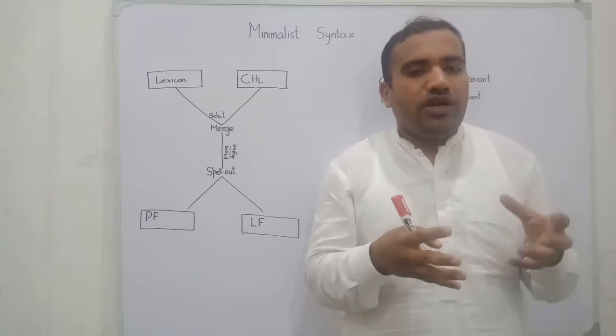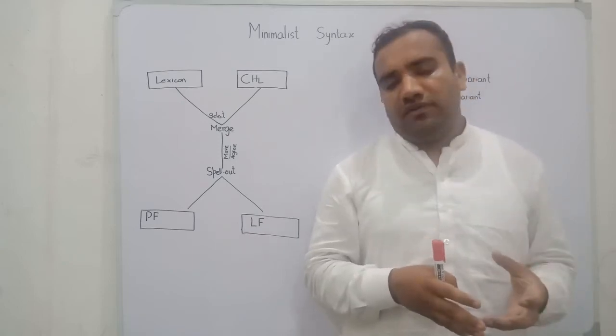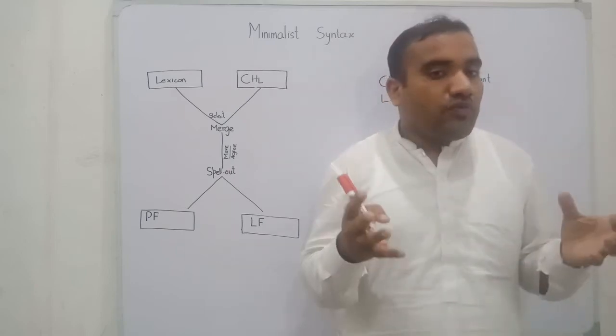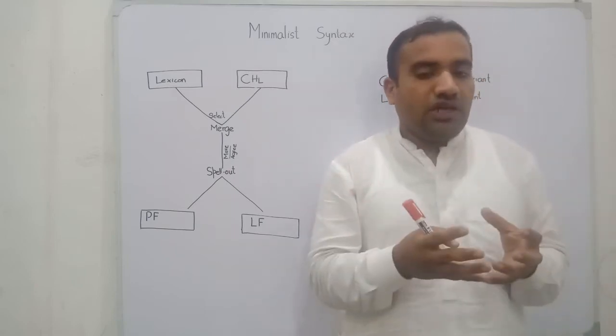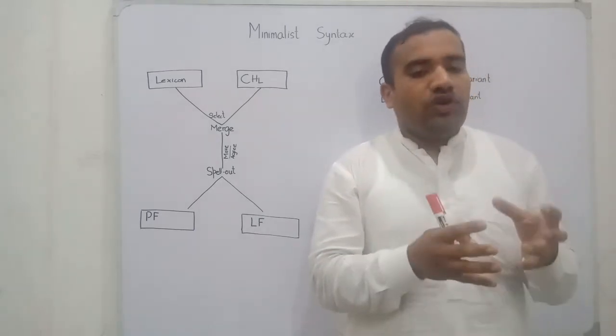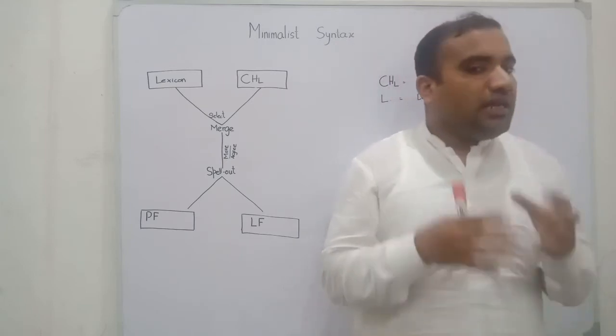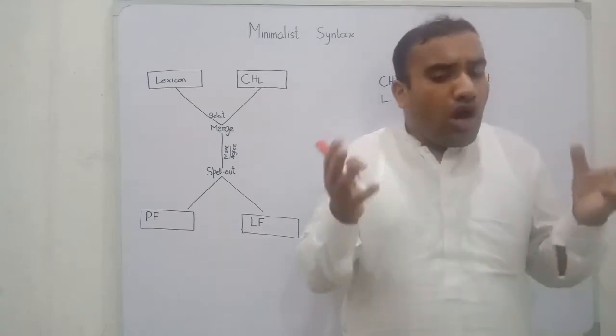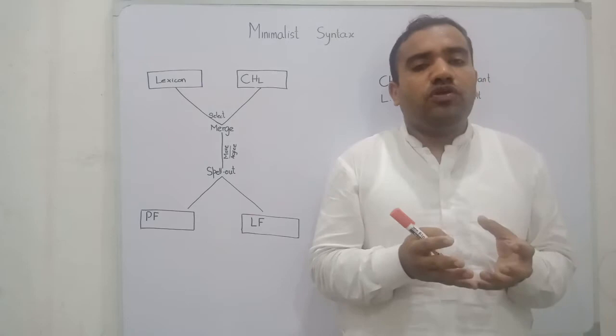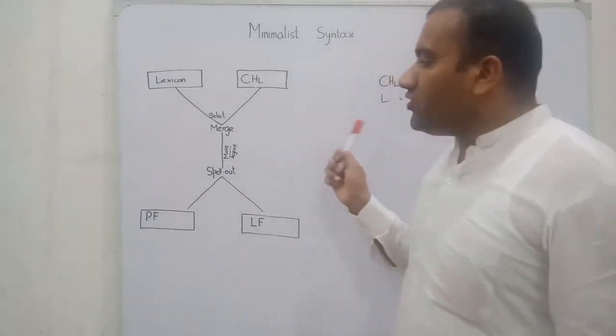One is the lexicon, second is the CHL, computational system for human language. When these two modules interact with each other, this is called the human faculty of language. Through the interaction of these two modules we can generate a fully grammatical sentence. Let's see how these modules interact with each other.